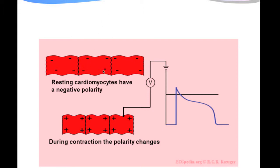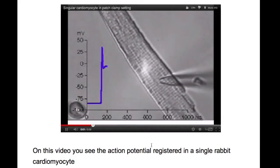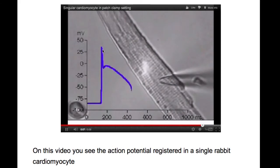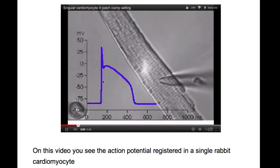Resting cardiomyocytes have a negative polarity, and during contraction the polarity changes and becomes positive. If you look at a single cardiomyocyte, you can record the electrical activity within that single cardiomyocyte and see the action potential.